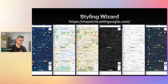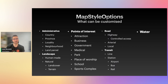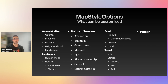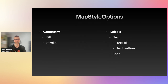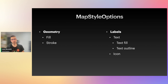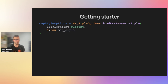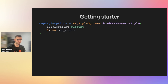In the styling wizard you can customize administrative areas, landscape, points of interest, roads, transit, and water bodies. For every item in those lists you can specify different colors for the geometry — fill color and stroke (the border) — and also colors for labels and icons. From the styling wizard you can export a JSON file, which you import into Android Studio in the raw folder of Android resources. Then in the MapStyleOptions property you use MapStyleOptions.loadRawResourceStyle() providing that JSON file.